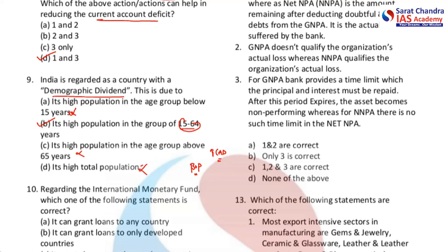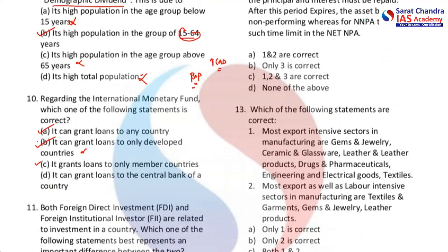When you have to pay net dollars or recognized foreign currencies to other players, it leads to a BOP crisis. Generally the IMF intervenes in this kind of scenario. The options are: A, it grants loans to any country; B, it grants loans only to developed countries — wrong, recently it bailed out Sri Lanka; C, it grants loans only to member countries; D, it can grant loans to the central bank of a country. Between C and D, the IMF grants loans to the member country itself, not just the central bank. The answer is C.